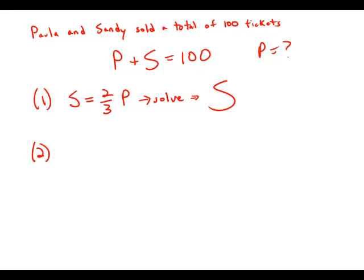Statement number two tells us Sandy sold 8% of all the raffle tickets sold at Club X. So Sandy equals 0.08 times X. Well, the trouble is we have no idea at all what the total number of raffle tickets are. We know that Paula and Sandy sold 100 of them. It may be that they sold only 150. It may be that they sold 3000.